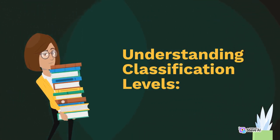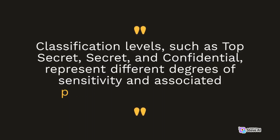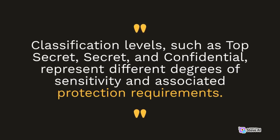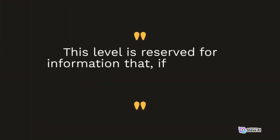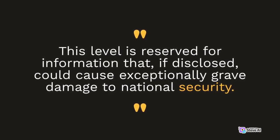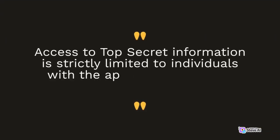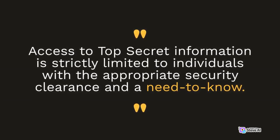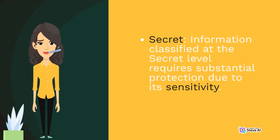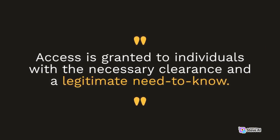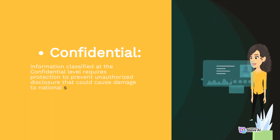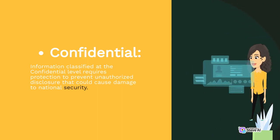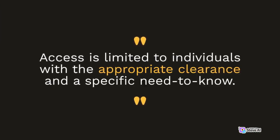Understanding Classification Levels: Classification levels such as Top Secret, Secret, and Confidential represent different degrees of sensitivity and associated protection requirements. Top Secret is reserved for information that, if disclosed, could cause exceptionally grave damage to national security; access is strictly limited to individuals with the appropriate security clearance and a need-to-know. Secret information requires substantial protection due to its sensitivity, with access granted to individuals with the necessary clearance and a legitimate need-to-know. Confidential information requires protection to prevent unauthorized disclosure that would cause damage to national security, with access limited to individuals with the appropriate clearance and a specific need-to-know.